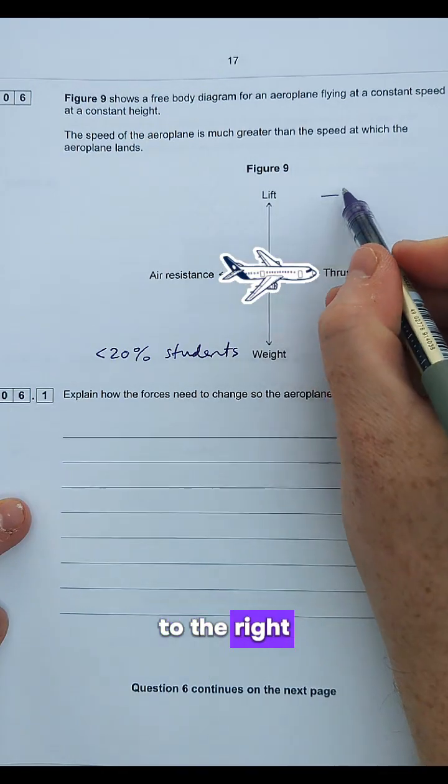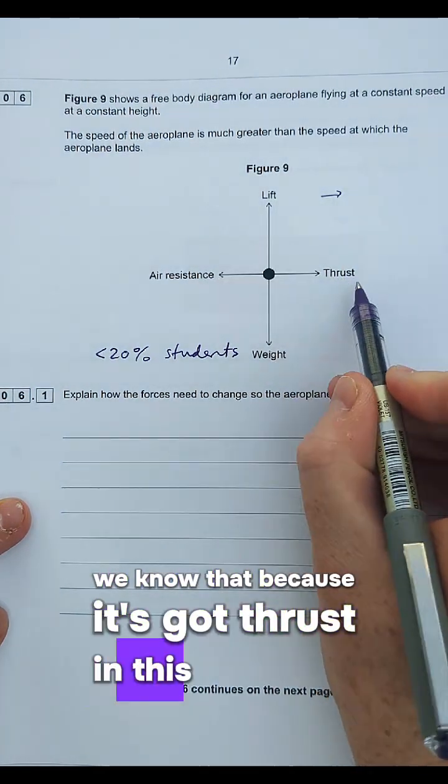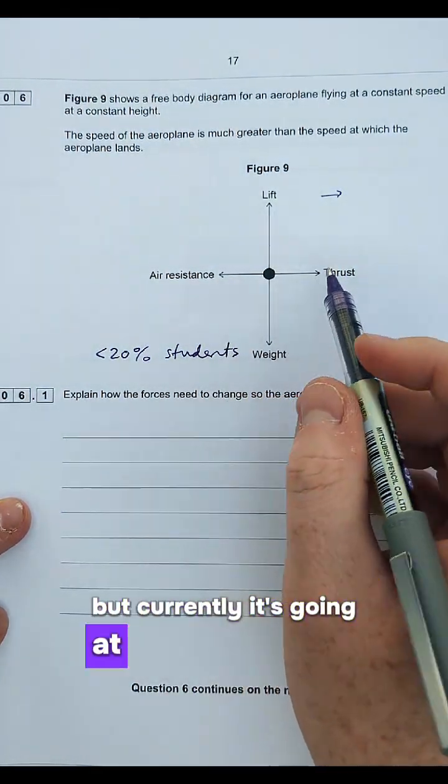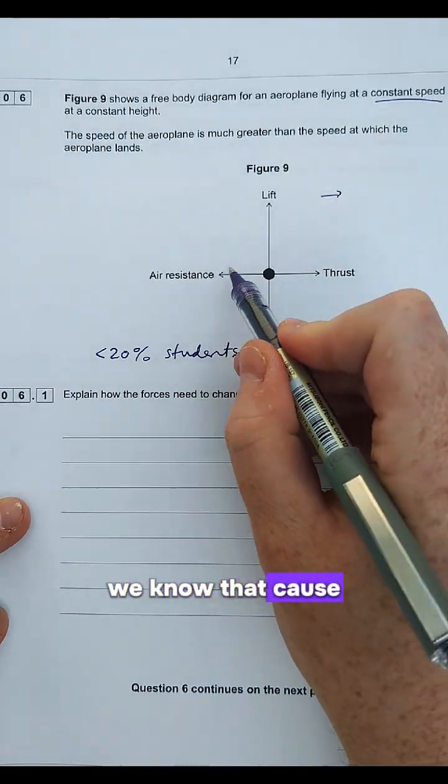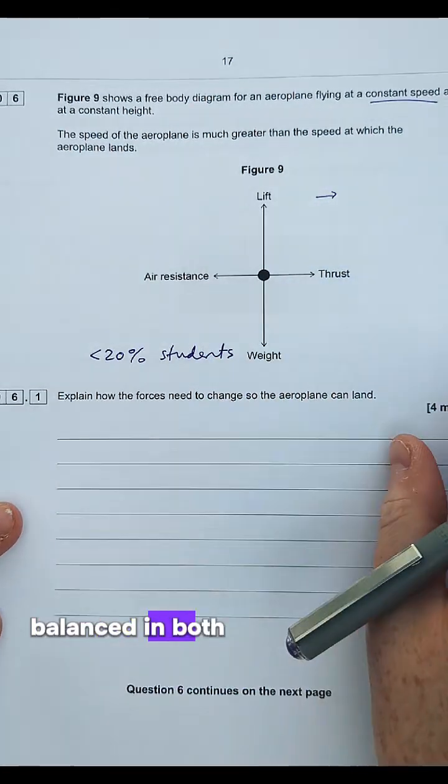We've got a plane that's going to the right. We know that because it's got thrust in this direction but currently it's going at constant speed. We know that because the forces are equal or balanced in both those directions.